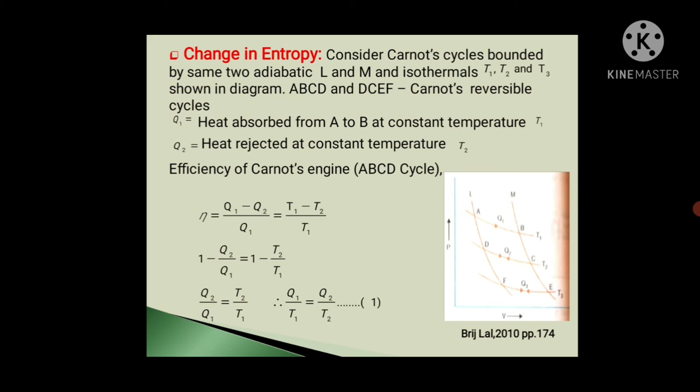So we can write 1 minus Q2 upon Q1 equals 1 minus T2 upon T1. So Q2 upon Q1 equals T2 upon T1. So Q1 upon T1 equals Q2 upon T2, equation first.